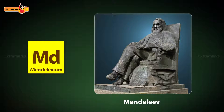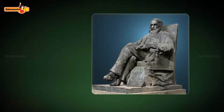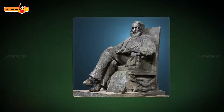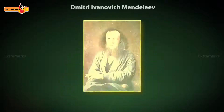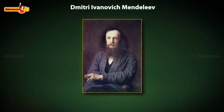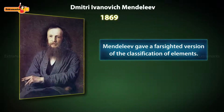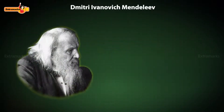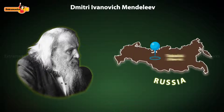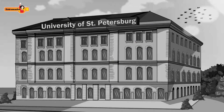Let us study who was Mendeleev and what was his contribution. Mendeleev, a Russian scientist, was a visionary who in 1869 gave a far-sighted version of the classification of elements. Dmitry Ivanovich Mendeleev was born in Tobolsk in Siberia on 8 February 1834. He completed his studies from the University of St. Petersburg.